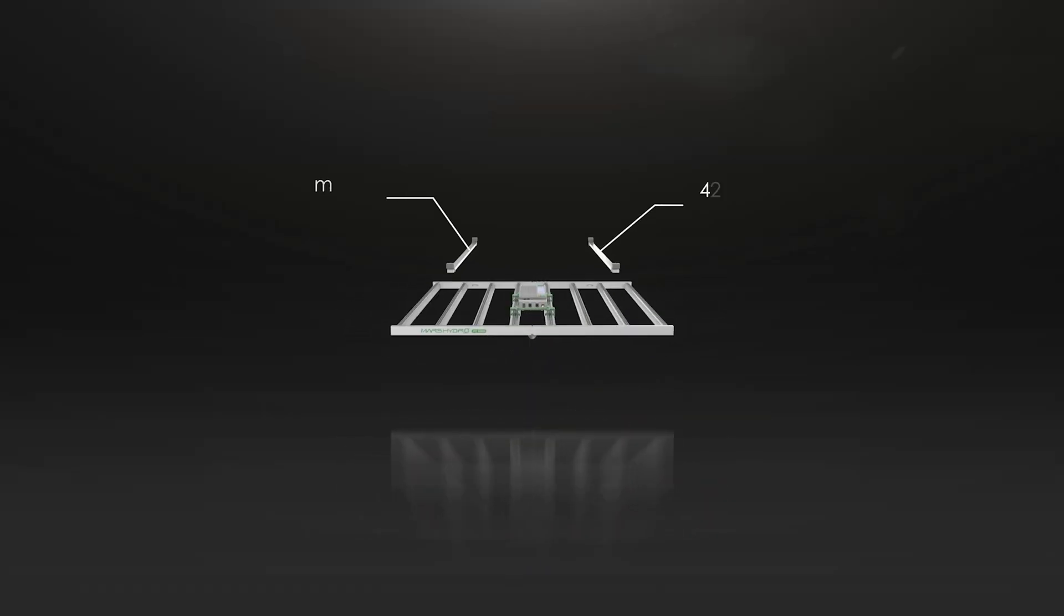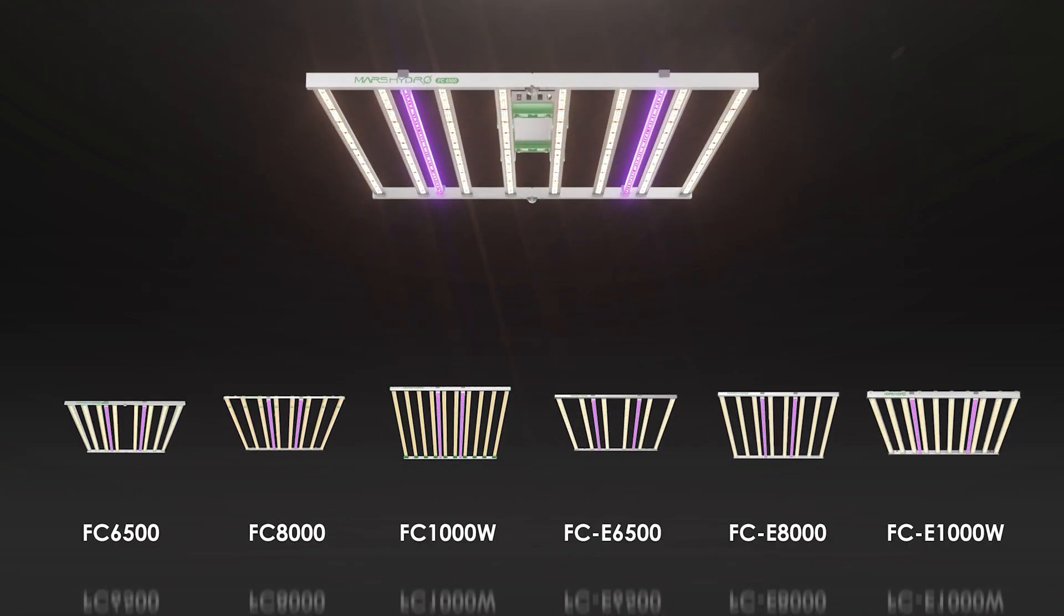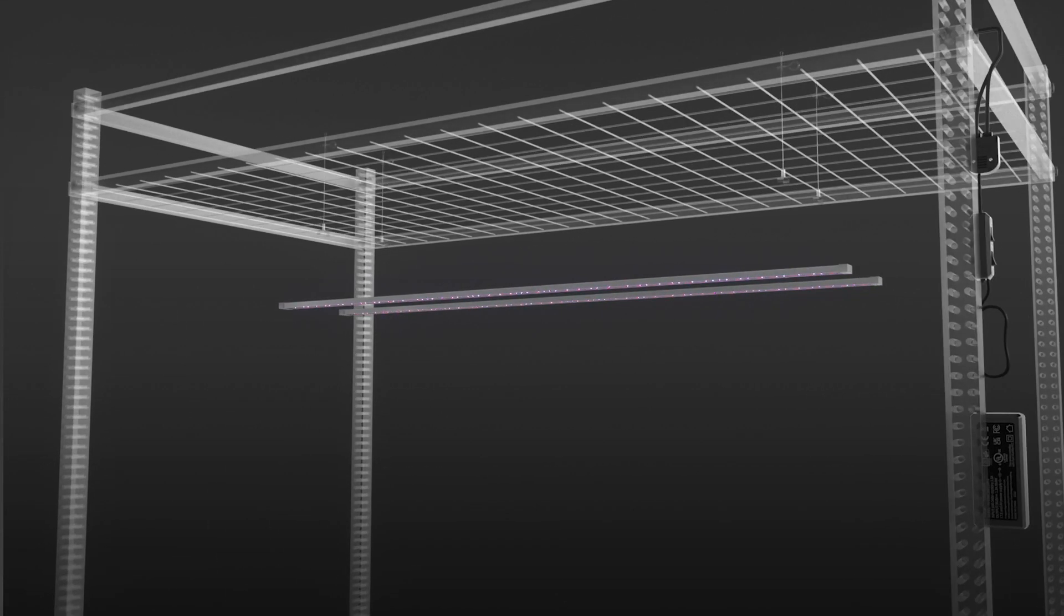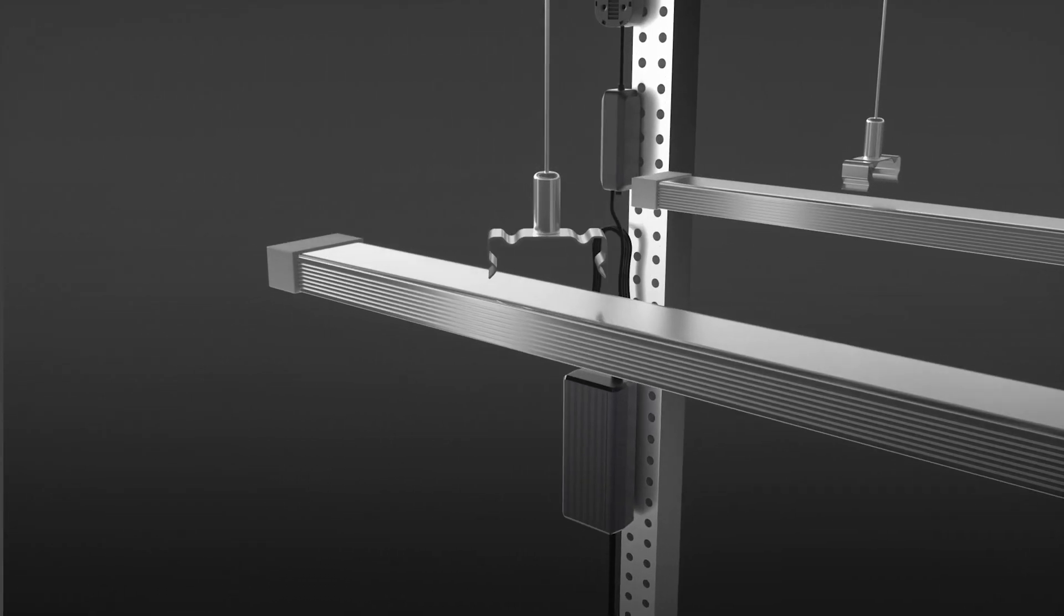The UR45 is 42.83 inches long and is ideally matched with the FC and FCE grow light, and can be installed anywhere that can accommodate this 43-inch long light bar. Additionally, the UR45 comes with adjustable height hooks for any other fixtures and installation requirements.